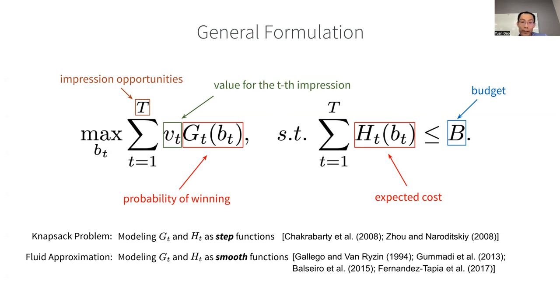As a result, people usually make these so-called fluid approximations. So that is when the number of impression opportunities at the big T is large, and the cost for each opportunity is small relative to the budget, we can model gt and ht as smooth functions.